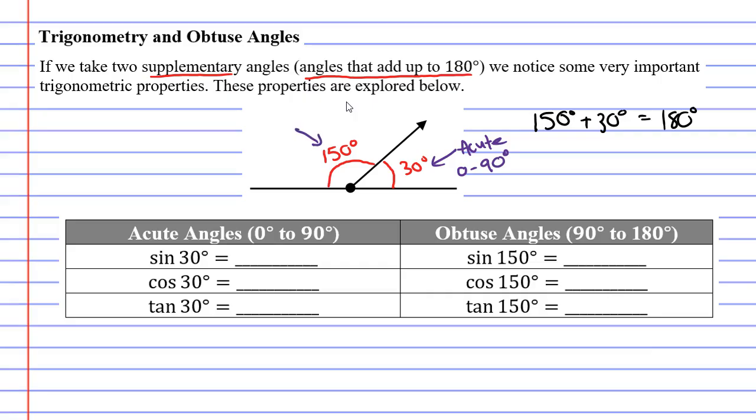The 150 degree angle is called an obtuse angle. Obtuse angles are between 90 to 180 degrees. They're bigger than the acute angles.